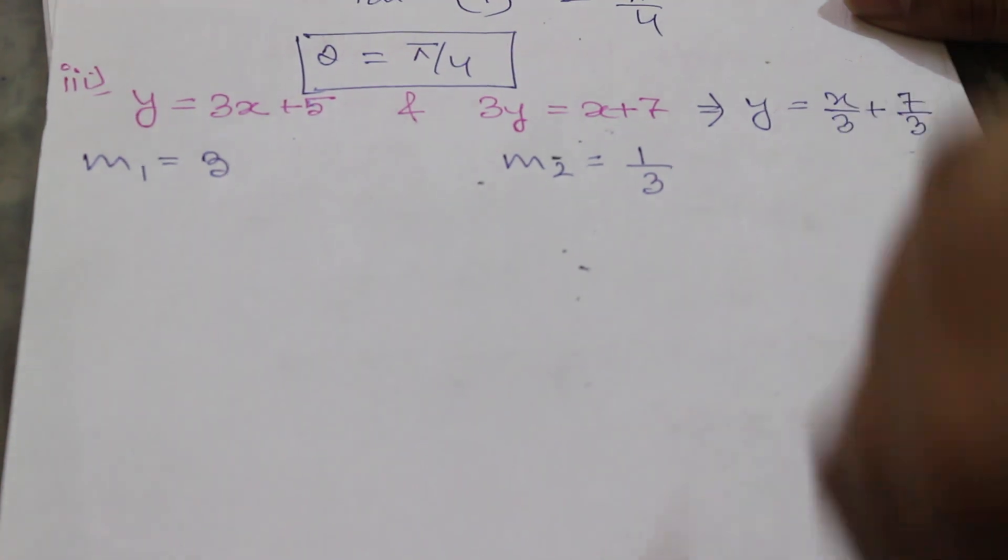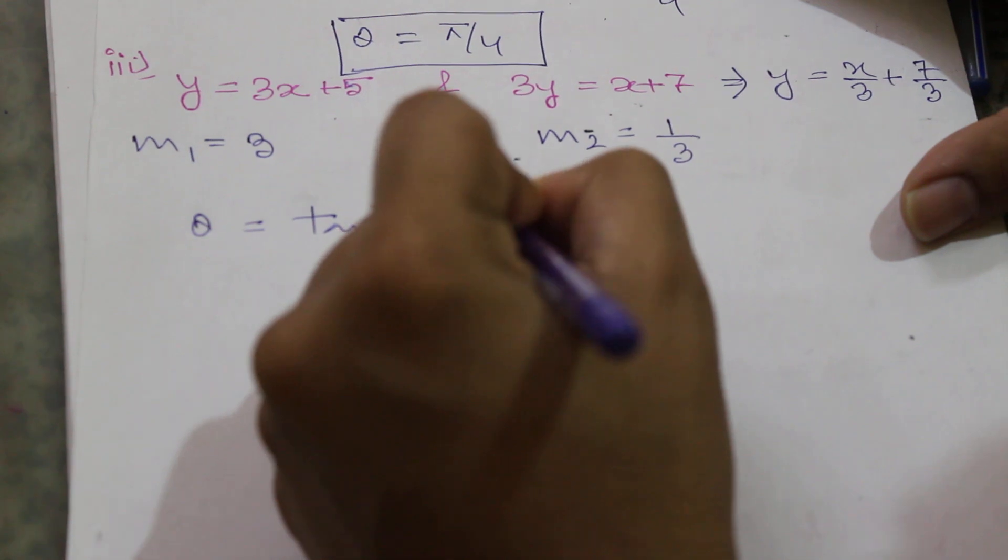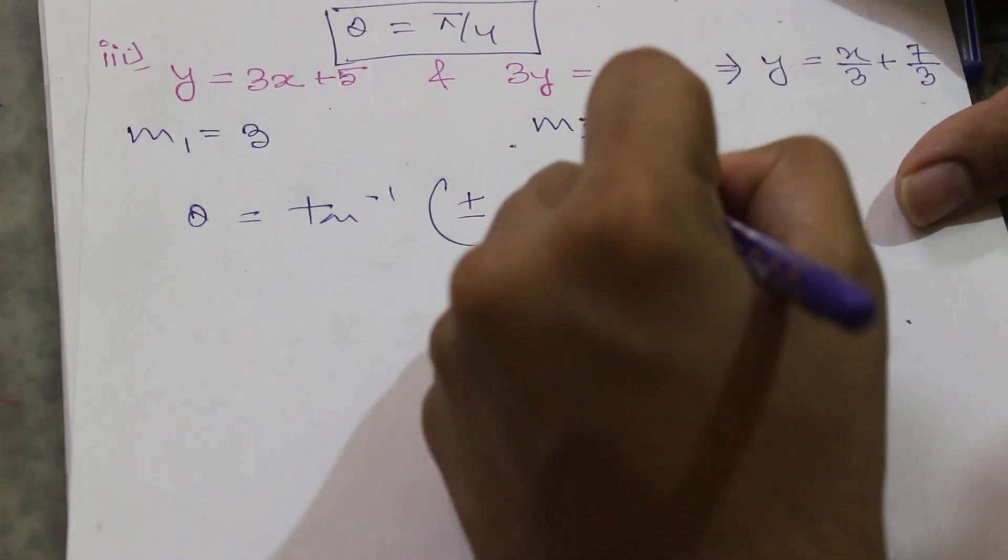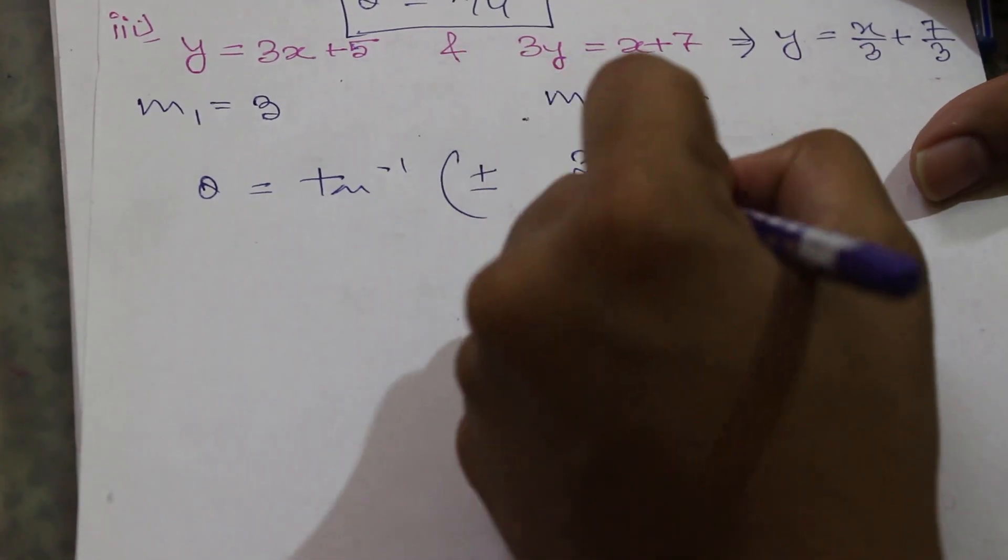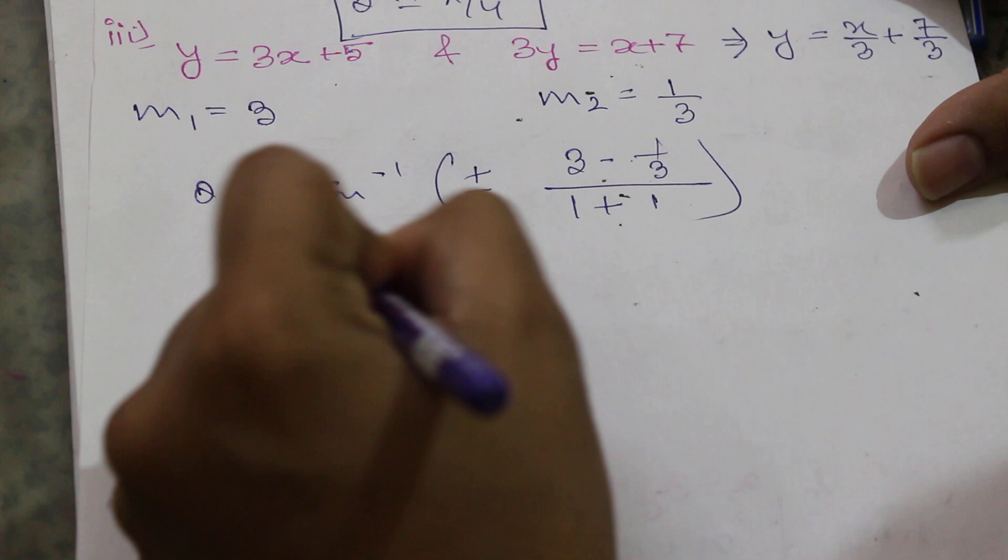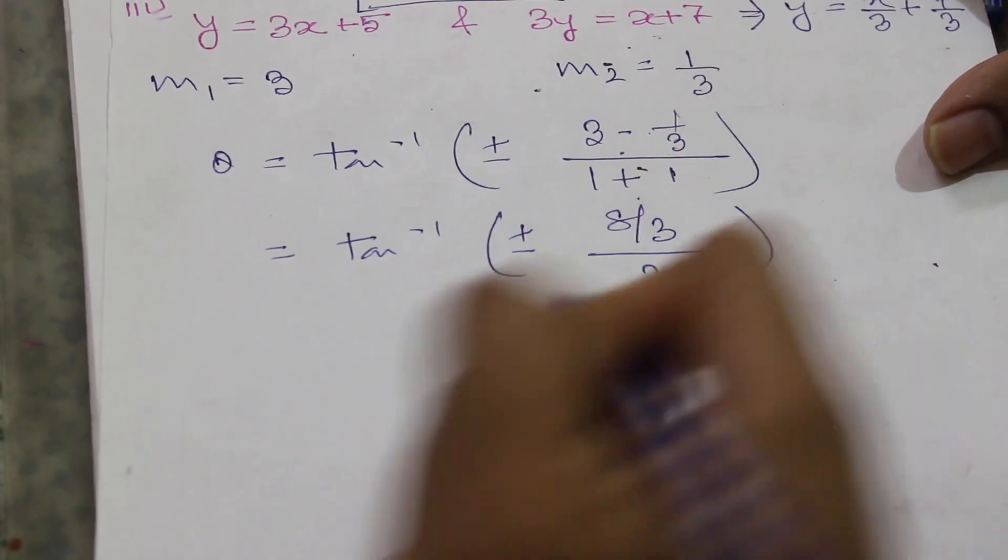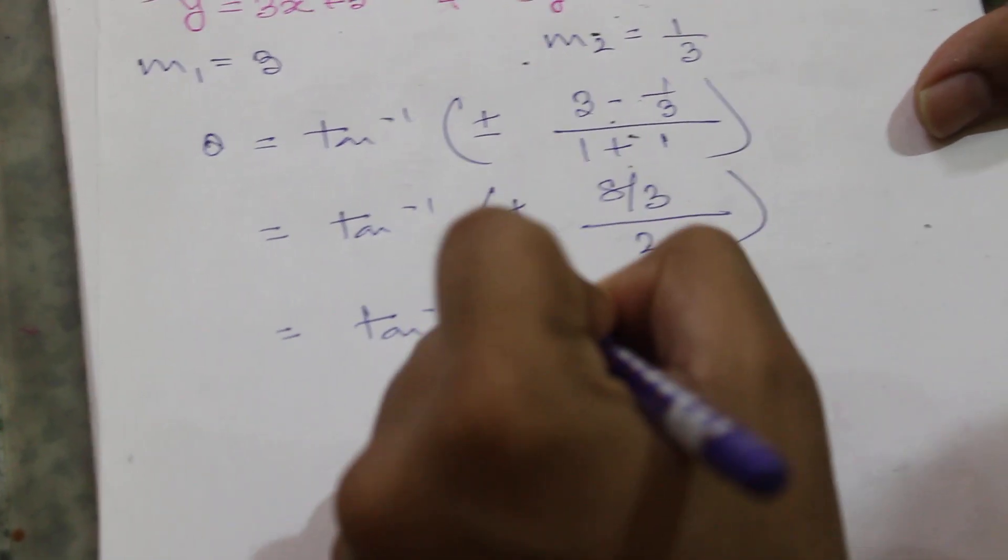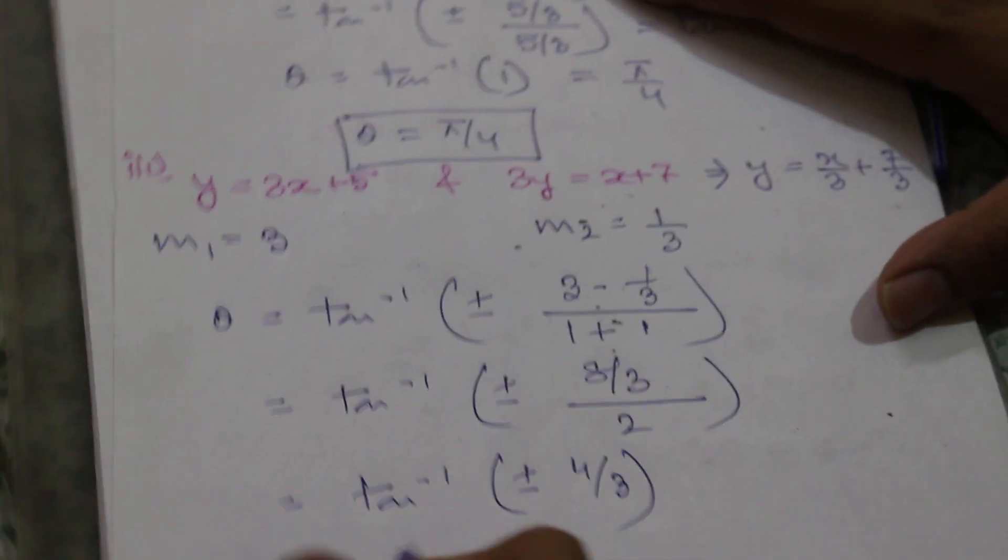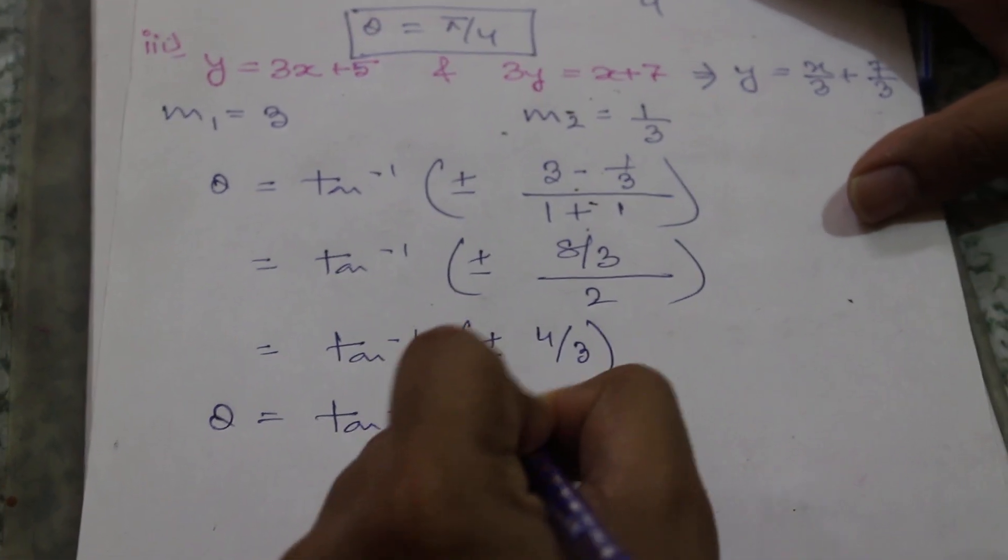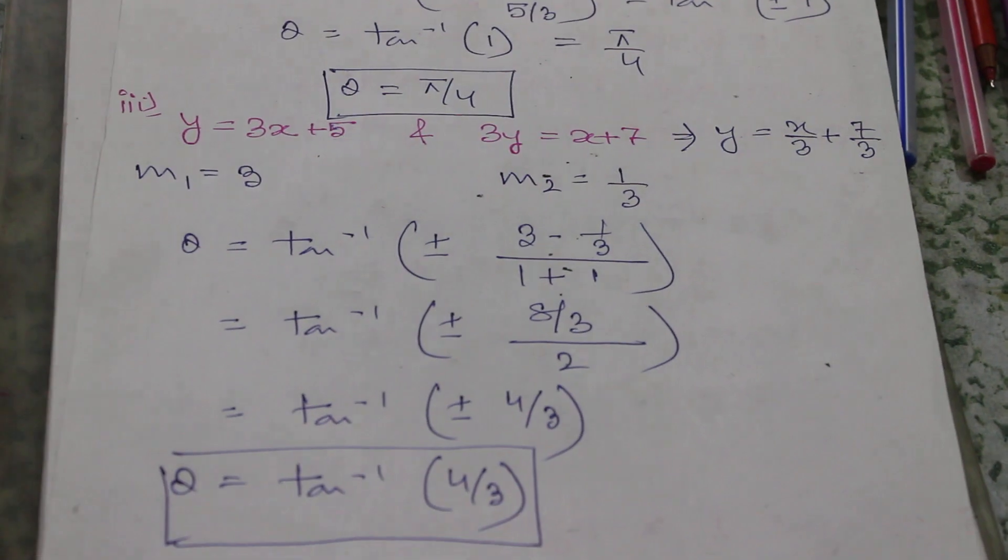So θ = tan⁻¹(±(m1 - m2)/(1 + m1·m2)). Now 3 × 1/3 = 1, so we calculate: θ = tan⁻¹(±(3 - 1/3)/(1 + 1)) = tan⁻¹(±(8/3)/2) = tan⁻¹(±4/3). If we consider only the acute angle, then θ = tan⁻¹(4/3). This is the angle between the two straight lines. Understood?